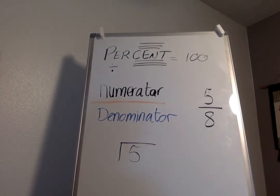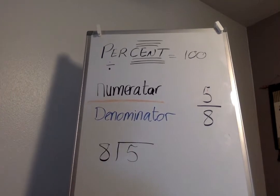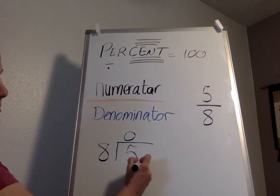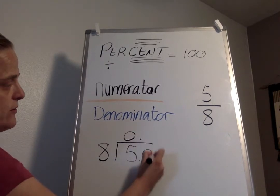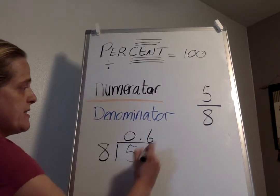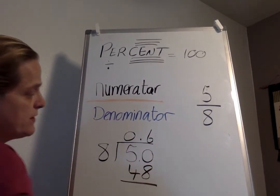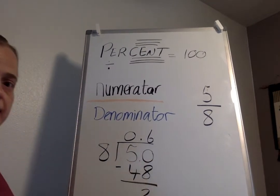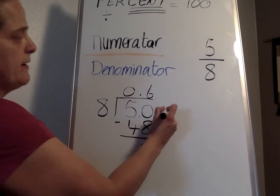Does 8 divide into 5? No. Zero holds the place. Put in a decimal, add a zero. Does 8 divide into 50? How many times? Well, we know that 6 times 8 is 48. Good. Now we can subtract, which gives us 2. Add a zero and bring down.